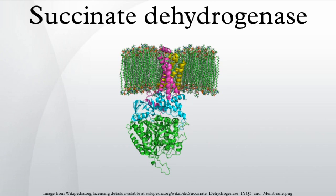Little is known about the exact succinate oxidation mechanism. However, the crystal structure shows that FAD, Glu-255, Arg-286, and His-242 of subunit A are good candidates for the initial deprotonation step. Thereafter, there are two possible elimination mechanisms: E2 or E1Cb. In the E2 elimination, the mechanism is concerted — the basic residue or cofactor deprotonates the alpha carbon, and FAD accepts the hydride from the beta carbon, oxidizing the bound succinate to fumarate. Refer to image 6.